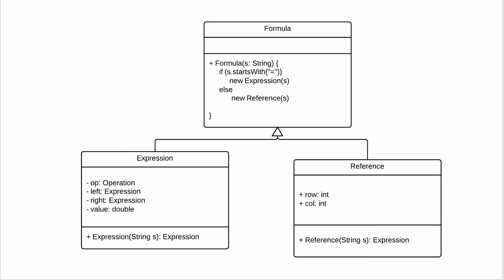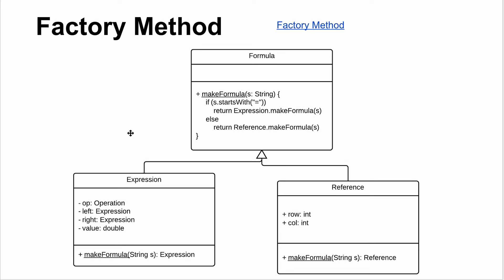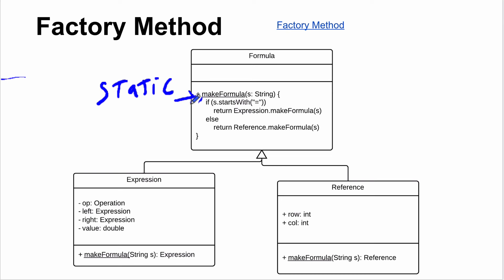The Factory Method is a very common pattern you'll see all over Java libraries and any object-oriented language. You create a static method — 'makeFormula' — underlined in UML to indicate it's static. It does the same logic: if the string starts with an equal sign, call the Expression's makeFormula; otherwise, call the Reference's makeFormula. The parent Formula calls the other two to make it.